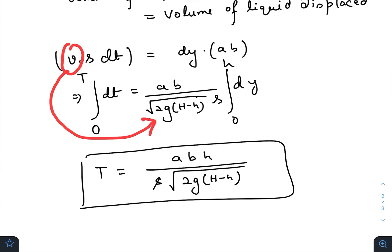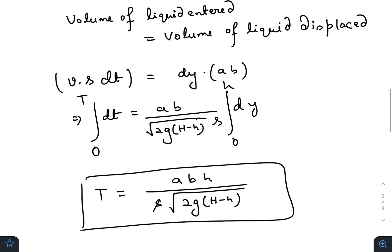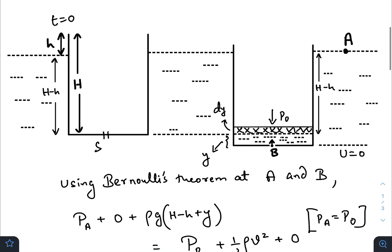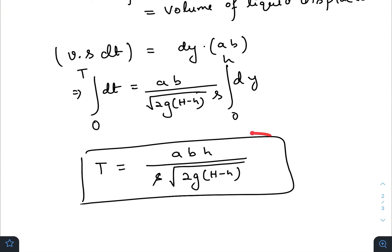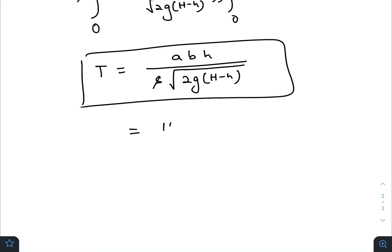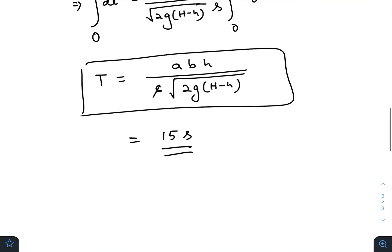Substituting v = √(2g(H − h)) into the volume conservation equation gives us the differential equation. Integrating from y = 0 to y = h (the full height that was above water), we get the total time T. Putting in the values, the final answer is 15 seconds.